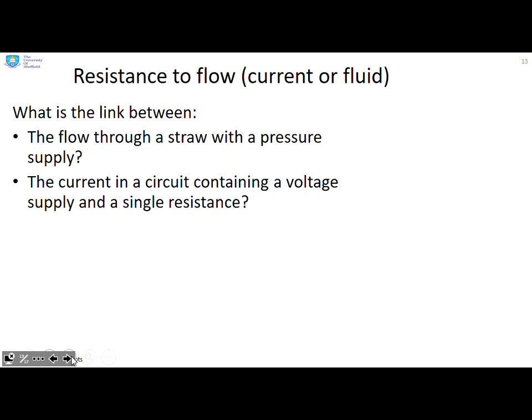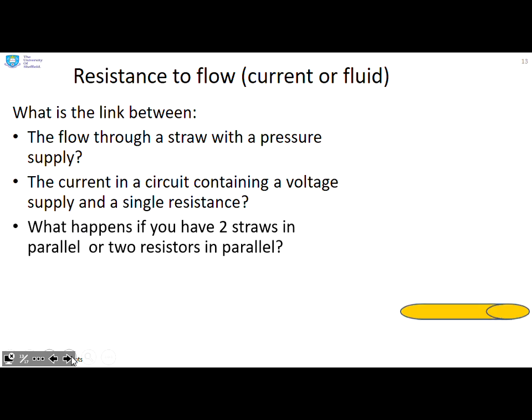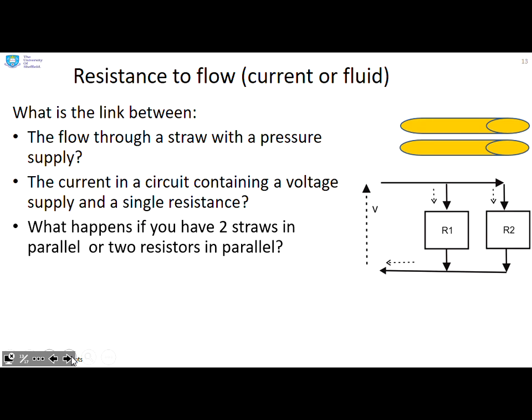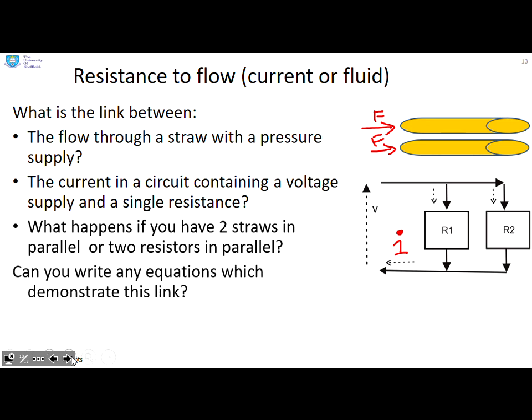Resistance to flow, and this could be an electrical current or fluid or indeed it could be heat. What is the link between the flow through a straw with a pressure supply and the current in a circuit containing a voltage supply and a single resistance? And then what happens if you have two straws in parallel or two resistors in parallel? So we've got a flow here going through a straw or we've got a current I going through this electrical circuit. Can you write any equations which demonstrate a link between these two apparently different systems?